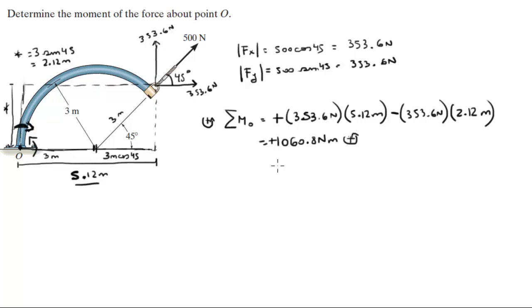And this is also known as 1.0608 kilonewtons per meter. Final answer. Remember, this is going counterclockwise because counterclockwise is positive.